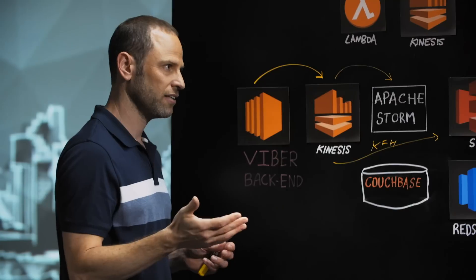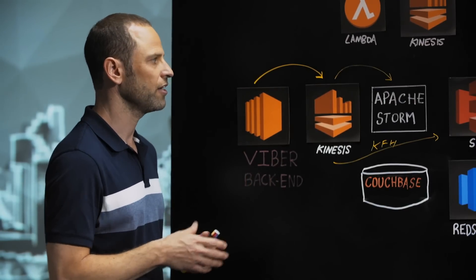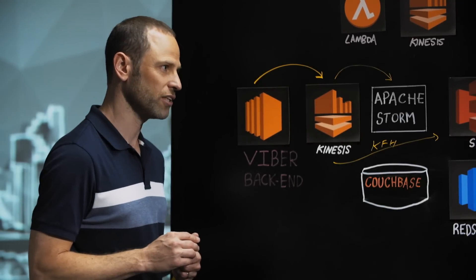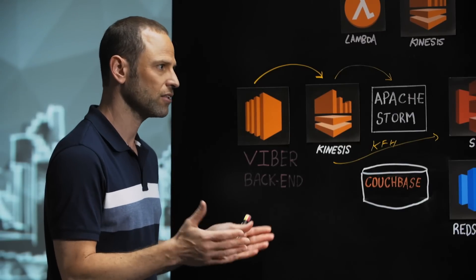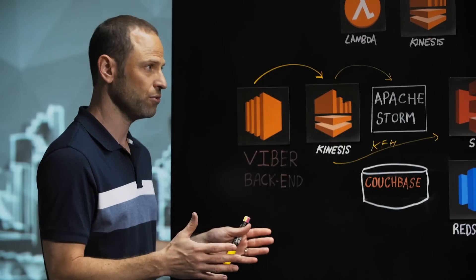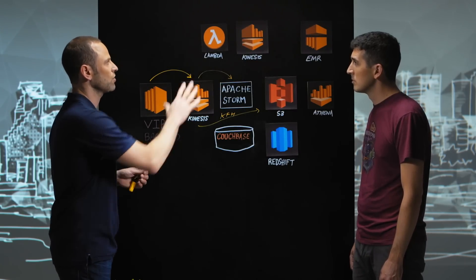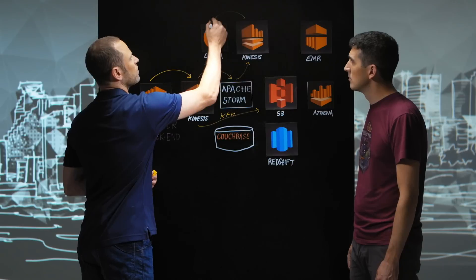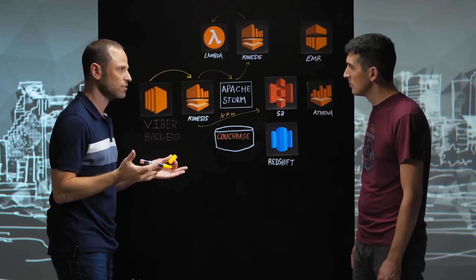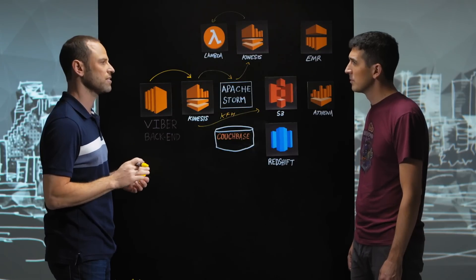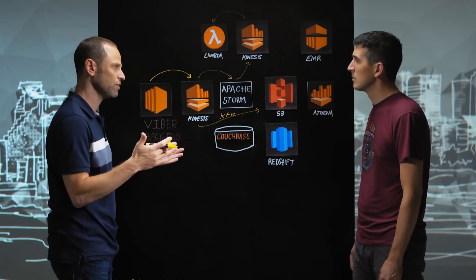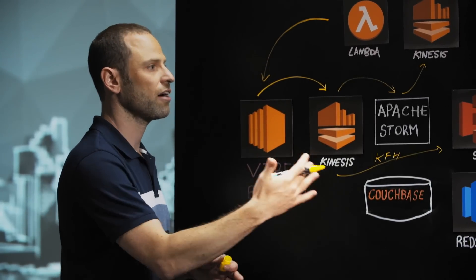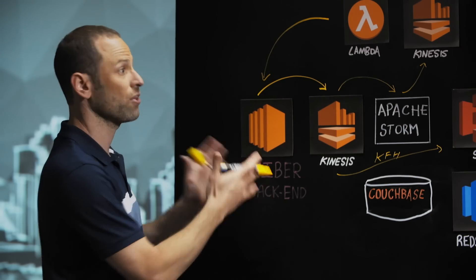It's taking each event, validating it, making sure the event is properly written, and if it's not, it's routing it into an invalid bucket. Each event is basically updating our Couchbase NoSQL database which holds a user profile, updating almost in real-time each profile. The second use case is our spam system, which runs events into another Kinesis stream, then sends them to Lambda functions that run machine learning models for spam detection. If we detect a spammer, we send an event back to the Viber backend to block that user within seconds.